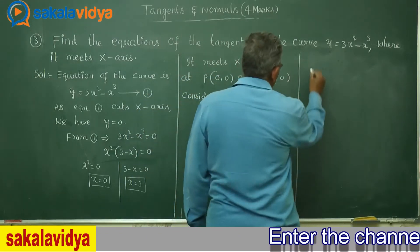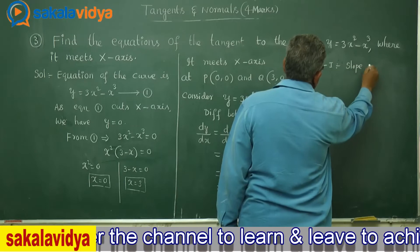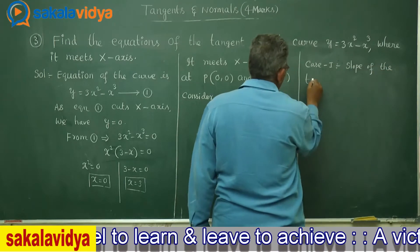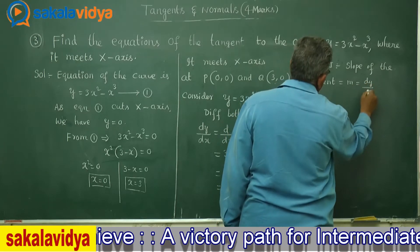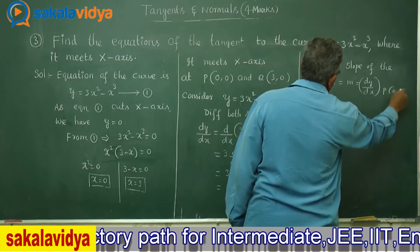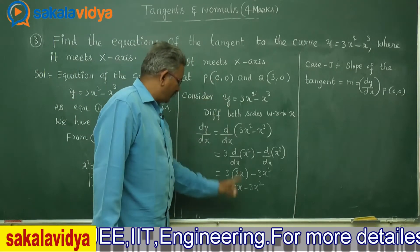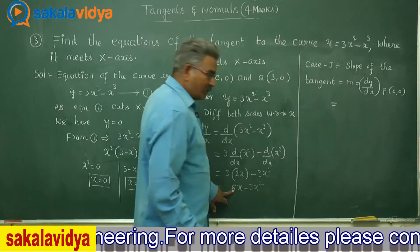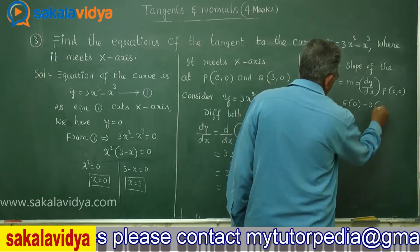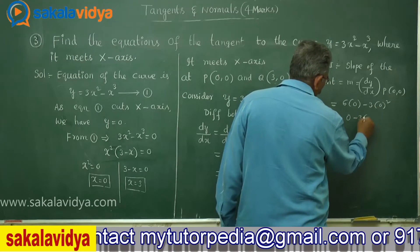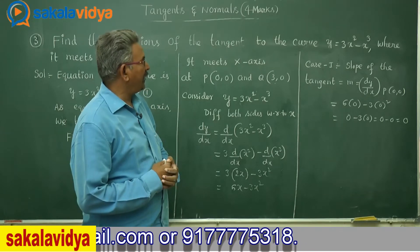Case 1: The slope of the tangent m equals dy/dx at P(0, 0). Substituting x equals 0: m equals 6 times 0 minus 3 times 0 squared, which equals 0 minus 0, so m equals 0. Now let us find the equation of the tangent at P with slope 0.